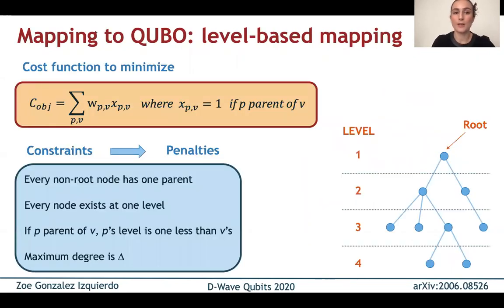To solve this on a quantum annealer, first we need to map to QUBO and we have a cost function that we want to minimize, which is the sum of the weights of the edges that belong to the tree. So the variables x_p,v are one if p is the parent of v, that is there's an edge in the tree between p and v and zero otherwise. There are several ways of doing this mapping, but we chose a level-based approach which means that every node is gonna be in a level. So the root node will be in level one, it will be the only one here, its children will be in level two, their children in level three, and so on.